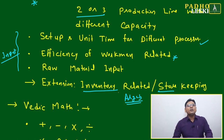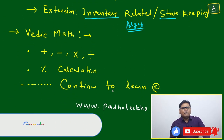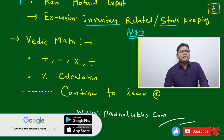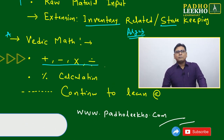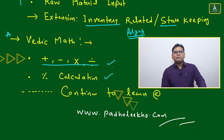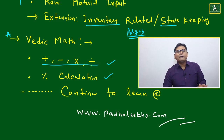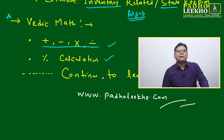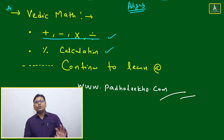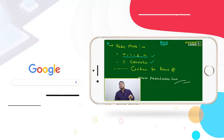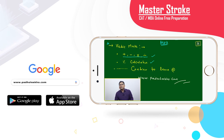I think we have covered enough related to this type of DI caselet on line production. What mathematical tools did we use? Just addition, subtraction, multiplication, division, and percentage calculation — that's all. The data looks complicated, but once you understand a little about manufacturing processes, you will easily grasp whatever data is given and solve questions in a straightforward way. Continue learning at the rate of parolico.com or download the mobile app. Thank you.